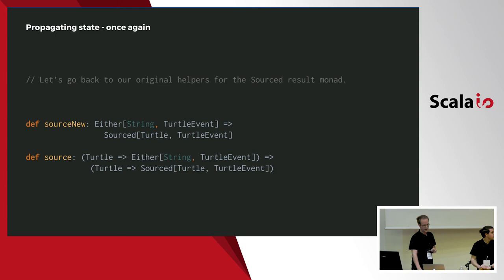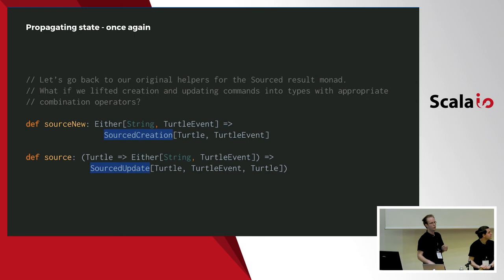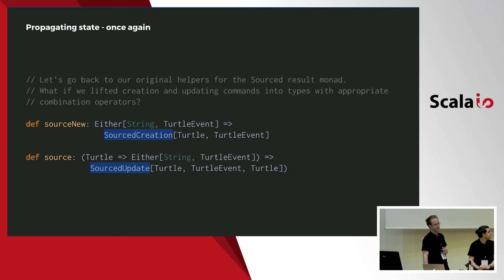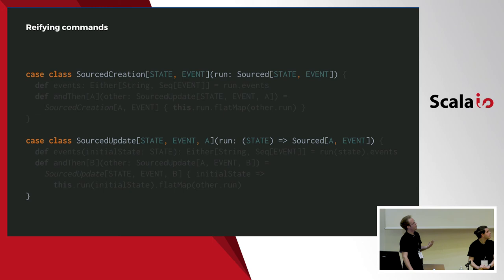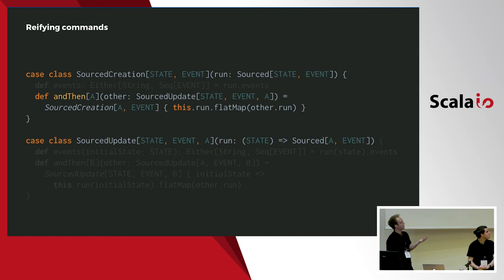If we look back at our sourcing helpers, what we did previously was lifting the results of commands into a monad. What if we lifted the commands themselves into structures on which we would have precisely the operators we talked about? We'd have a SourceCreation class and a SourceUpdate class. The first encapsulates a creation command which returns a source. The other encapsulates a modification command. It's easy to define operators on these classes which have exactly the semantics we wanted.